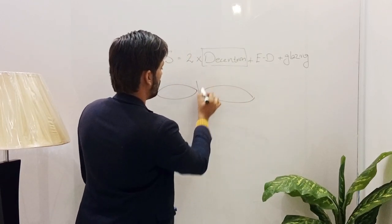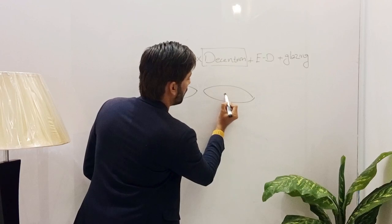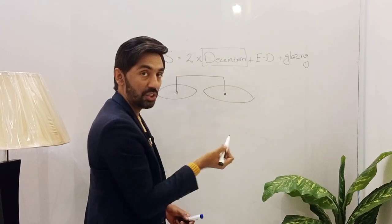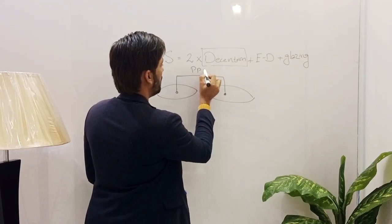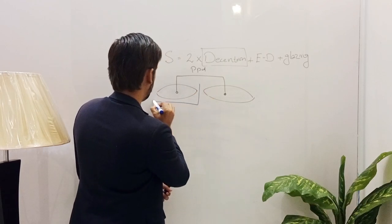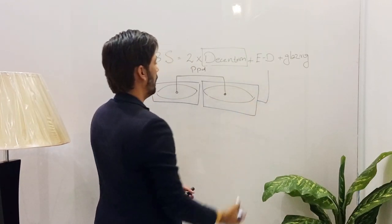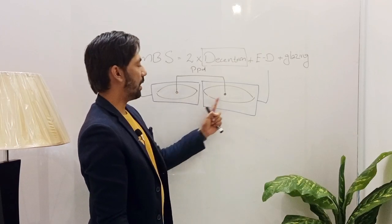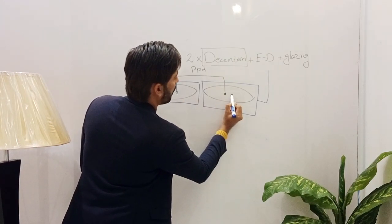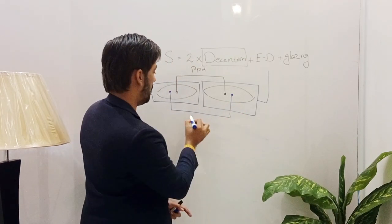Here are two eyes with the nose between them. The distance between the two pupils is the patient's PD. Now fitting a frame — the black dots represent the two pupils, and the blue dots represent the frame PD. The distance between the two blue dots is the frame PD.